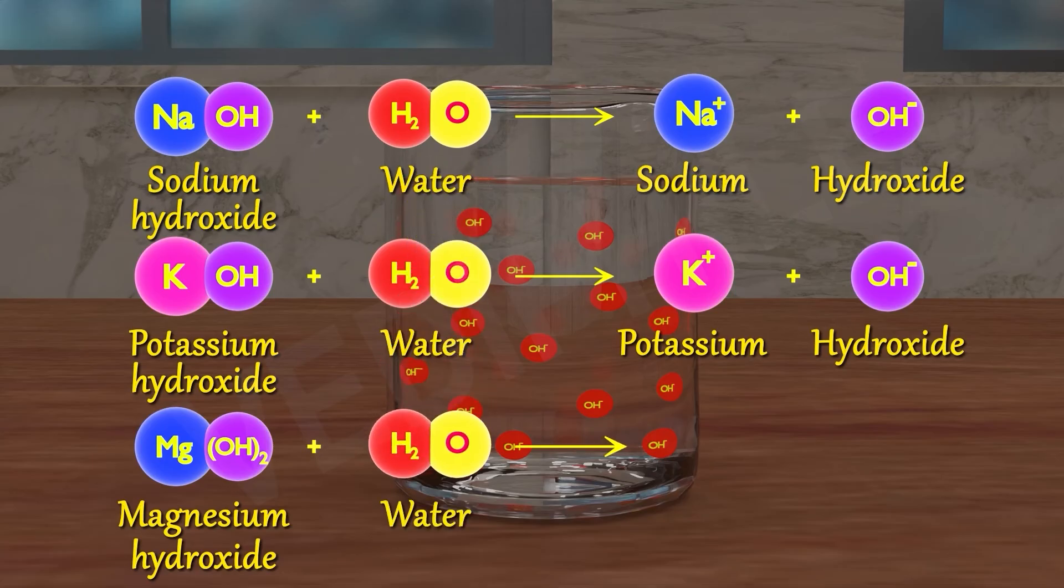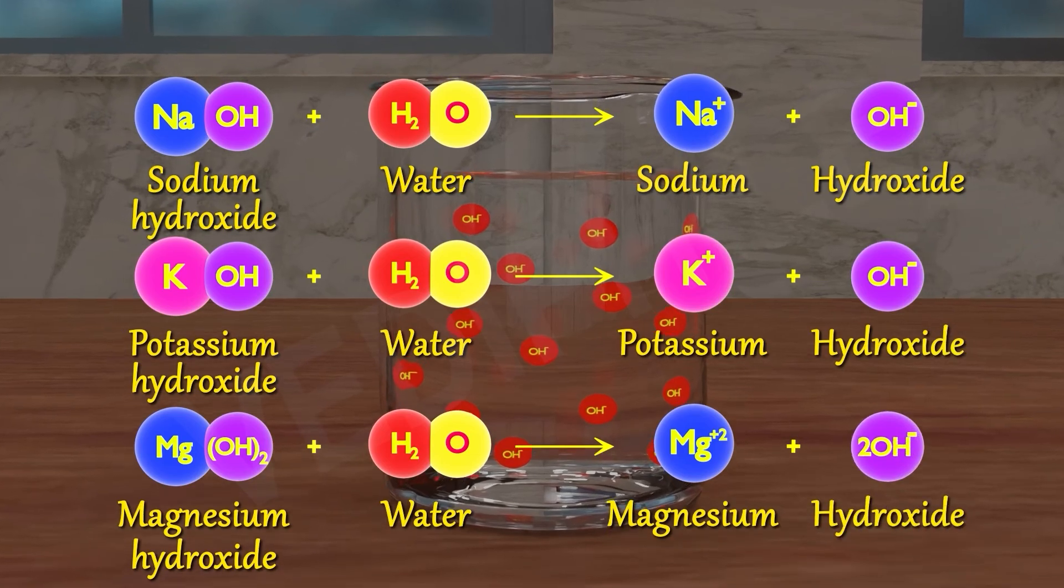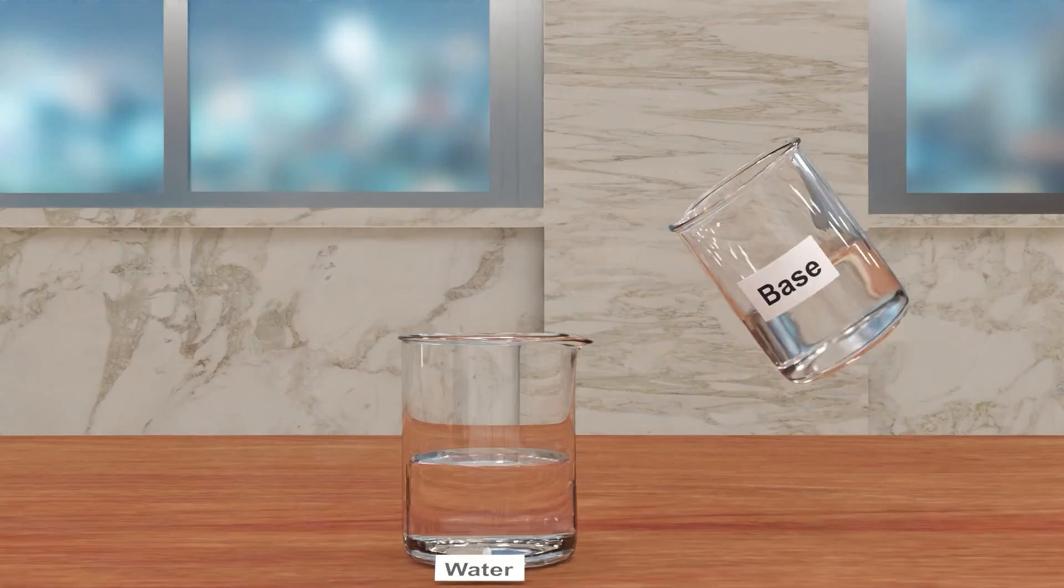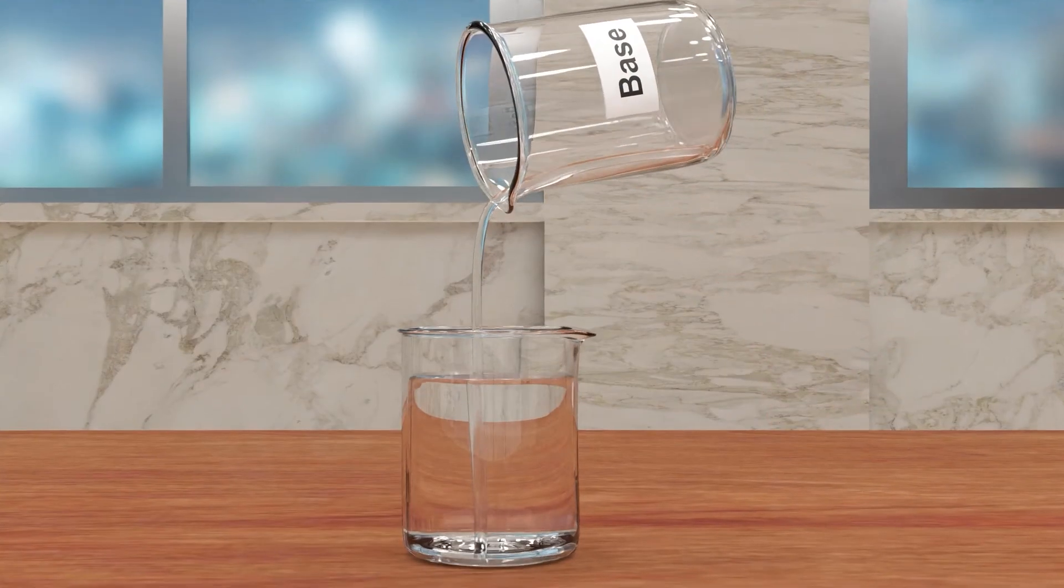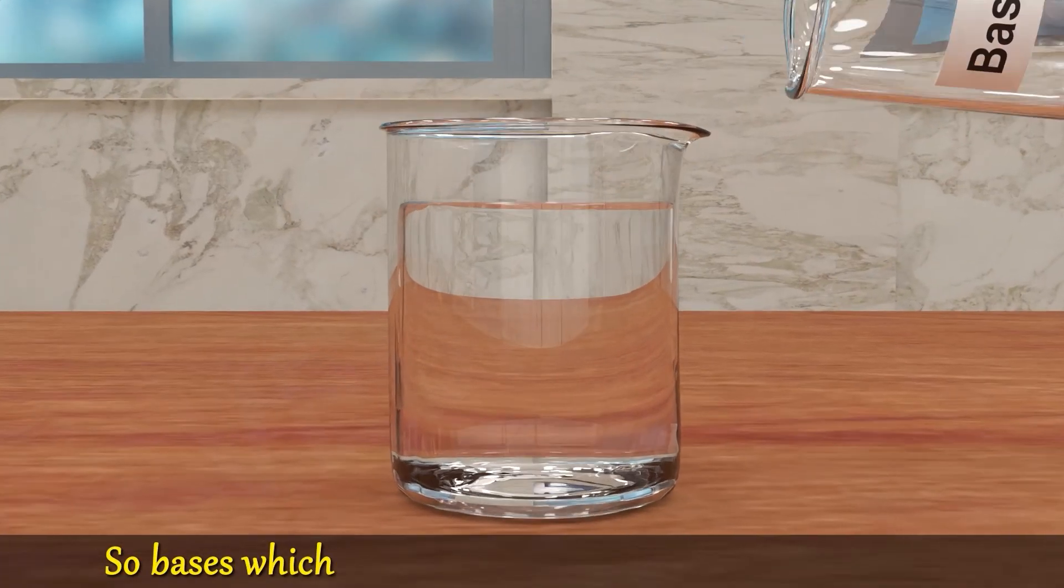Mg(OH)2 in water produces Mg 2 plus and 2 OH minus ions. This means bases produce hydroxide ions in water, but all bases do not dissolve in water. Not all bases can dissolve in water.